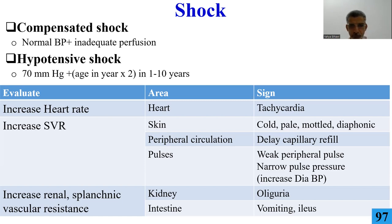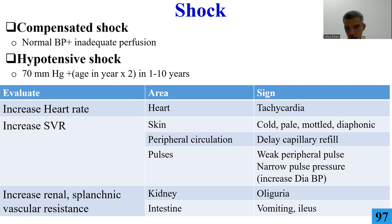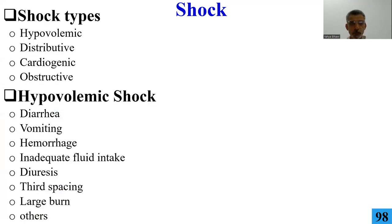If intestinal vasoconstriction occurs, you get vomiting and ileus. There are many types of shock: hypovolemic, distributive, cardiogenic, and obstructive. In neonates, there is also shunt or PDA shock.